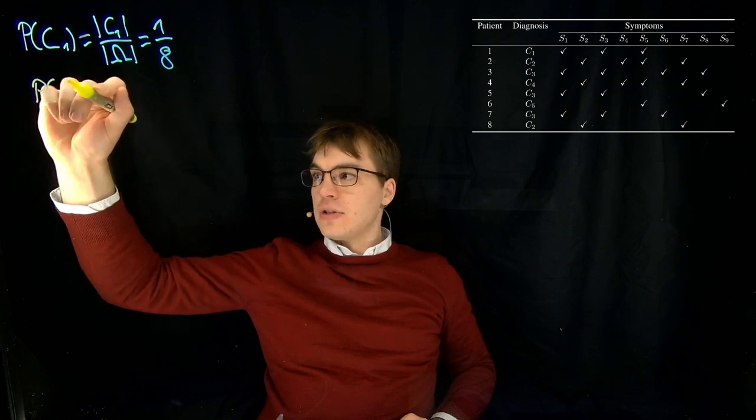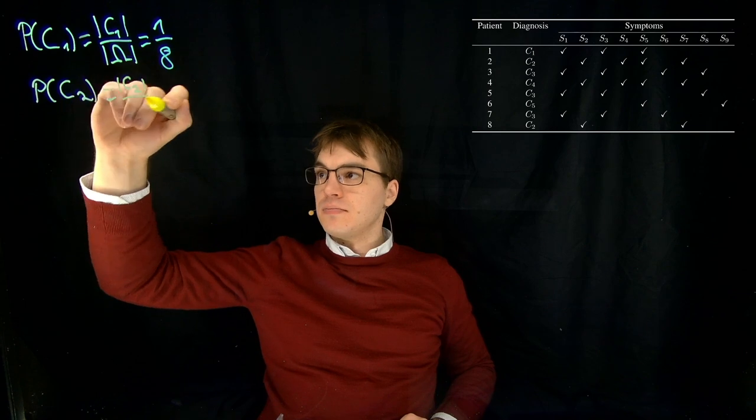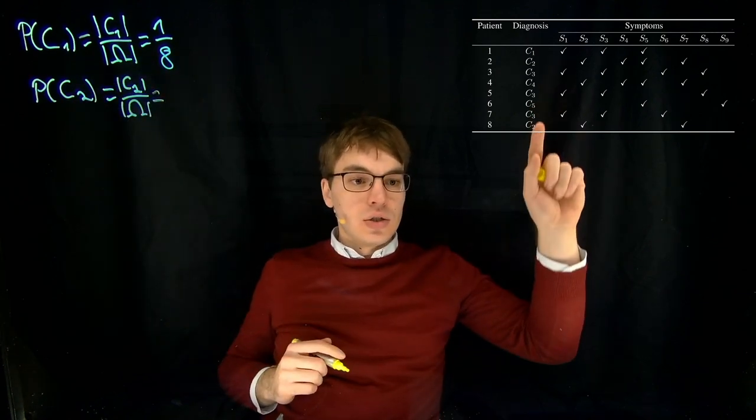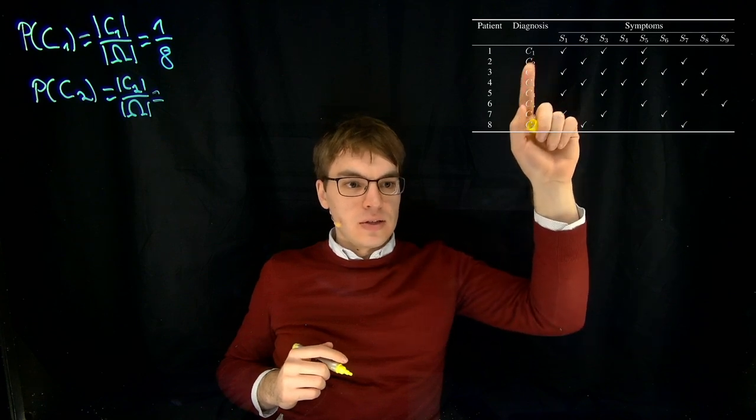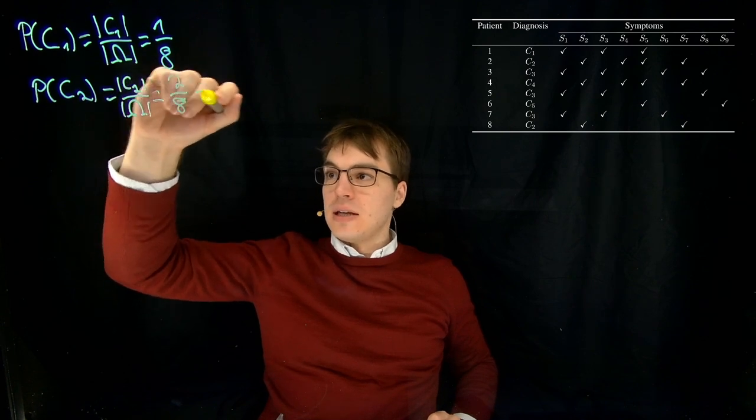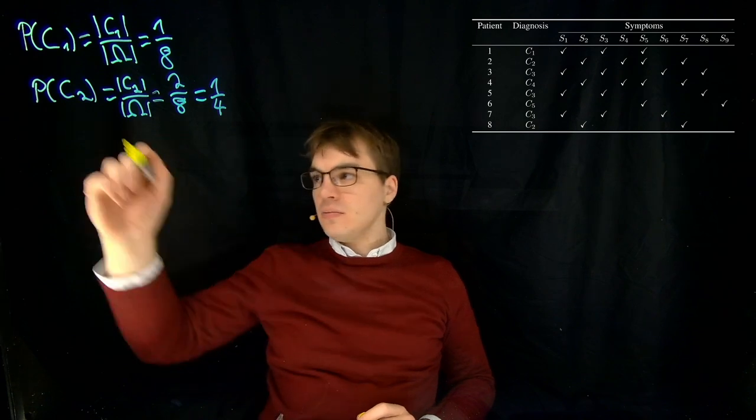But for C2, for example, we would get two over here because we have C2 twice, once here and once there. Again, divided by eight, which is one divided by four, and so on.